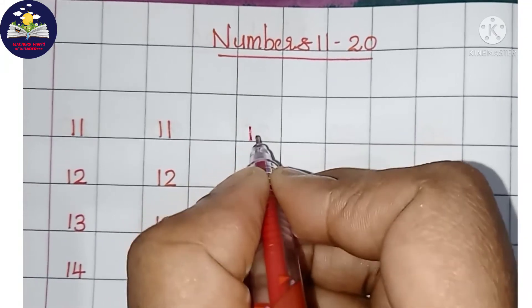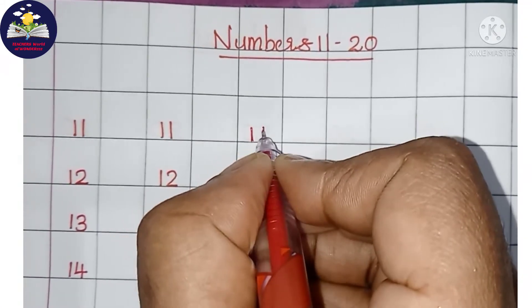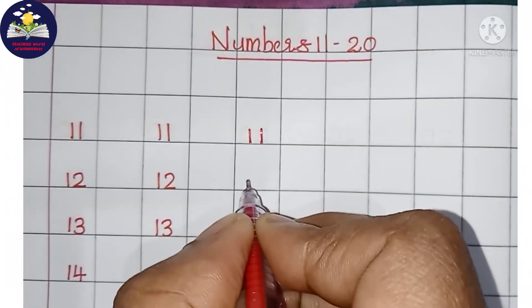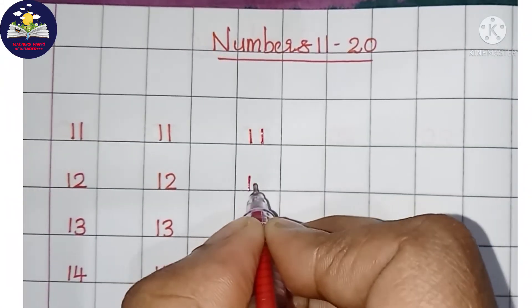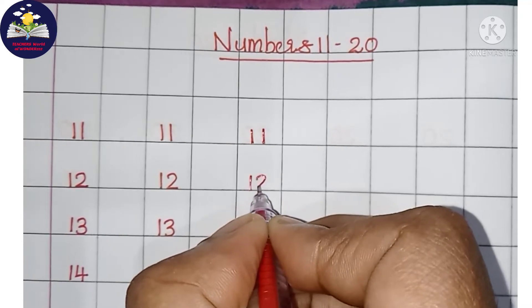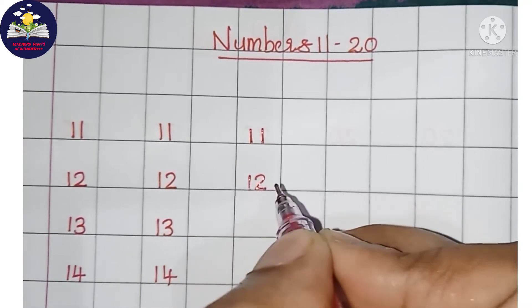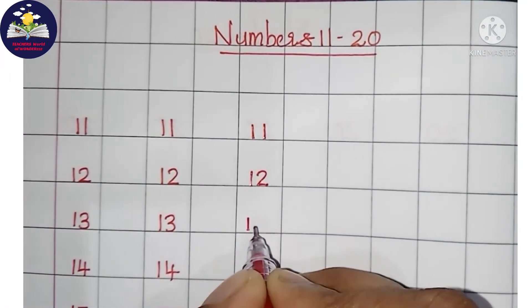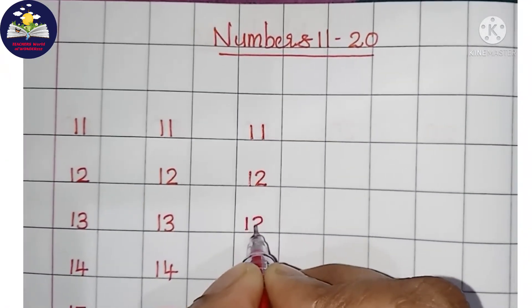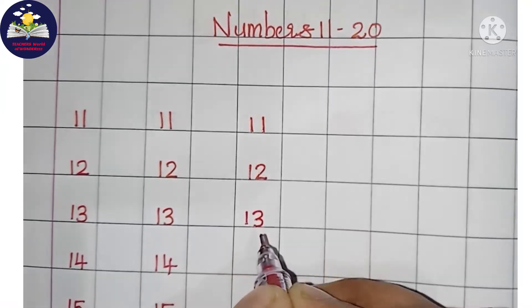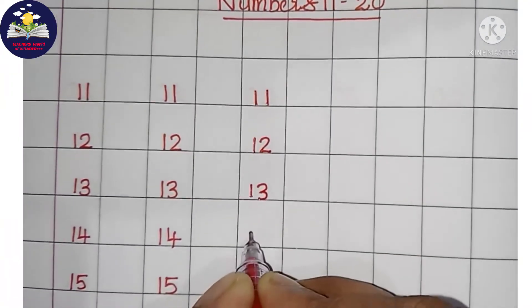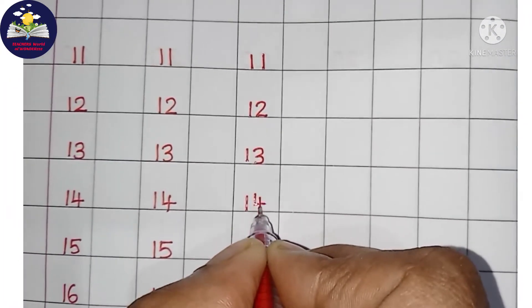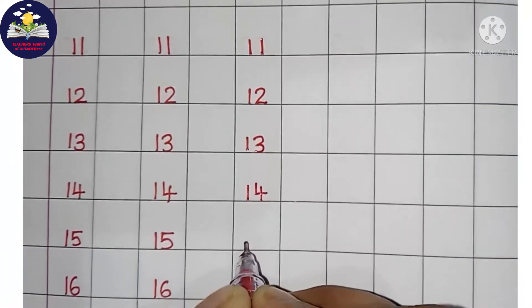1 ten and 1 one is 11. 1 ten and 2 ones is 12. 1 ten and 3 ones is 13. 1 ten and 4 ones is 14.